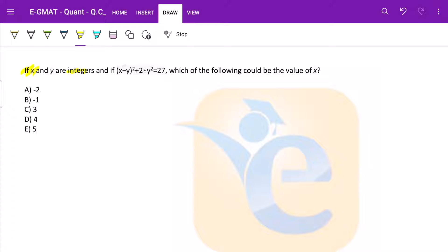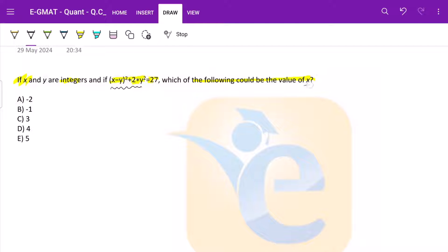If x and y are integers and if (x - y)² + 2y² = 27, which of the following could be the value of x. Now this question may seem very difficult because we have two variables and one equation and we just need to find the value of x. So how do we go about it?